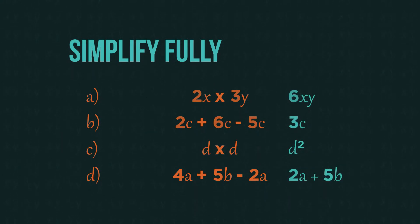How did you get on? For the first one, we just do 2 multiplied by 3 is 6, and remove the multiplication sign, so we get 6xy.